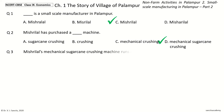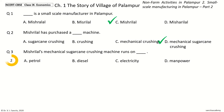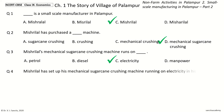Question 3: Mishrilal's mechanical shurakane crushing machine runs on dash. The options are Petrol, Diesel, Electricity, Manpower. And the answer is Electricity. So, Mishrilal's mechanical shurakane crushing machine runs on Electricity.